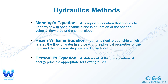What are some hydraulics methods? These aren't necessarily pipe design methods but equations used to determine flow in a pipe and the size a pipe needs to be. Manning's equation is an empirical equation that applies to uniform flow in open channels and is a function of channel velocity, flow area, and channel slope — used for open channels as opposed to closed channels. The Hazen-Williams equation is an empirical relationship relating the flow of water in a pipe with the physical properties of the pipe and the pressure drop caused by friction, including the effects of pipe bends. Bernoulli's equation is a statement of the conservation of energy principle for flowing fluids, often used to determine pressure at different pipe locations and the energy in the entire system.